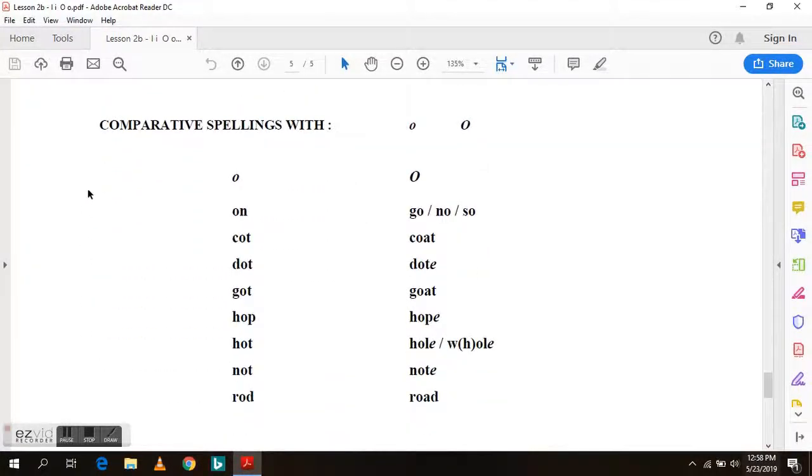Here are some comparative spellings between uh and o. On, go, know, so. Cot, coat. Dot, dote. Got, goat. Hop, hope. Hot, hole. And hole. Not, note. Rod, road.